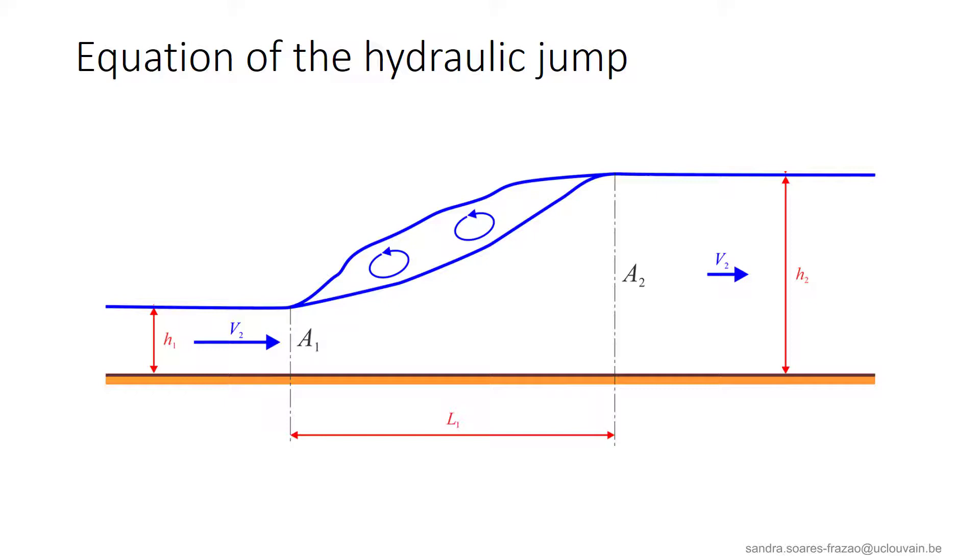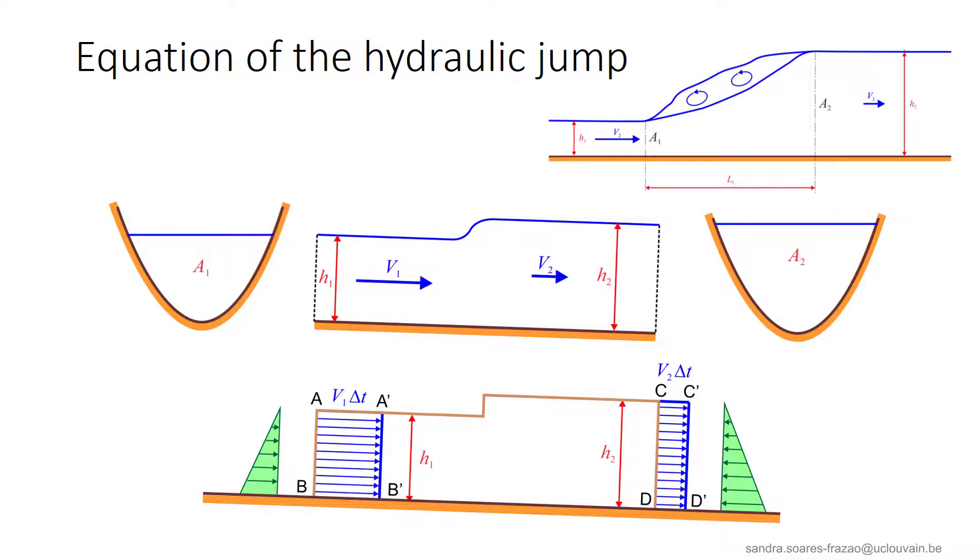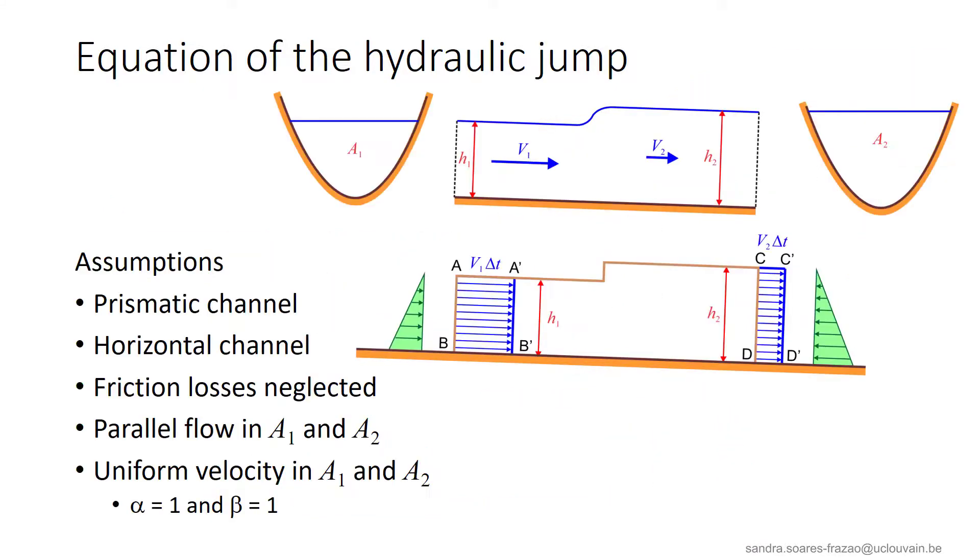As explained earlier, a hydraulic jump extends in the reality over a certain length, but to write the equations, it will be represented as a sharp discontinuity, as in this illustration. We will assume a prismatic, almost horizontal channel, which means that we will neglect the contribution of the weight parallel to the bed in the balance of forces. We will also neglect the friction losses, because these will be much smaller than the actual head losses occurring in the hydraulic jump. The flow is considered as parallel upstream and downstream from the jump, so we will choose a control volume according to this assumption. Finally, we will assume that the velocity distribution in these upstream and downstream sections is uniform, in such a way that the non-uniformity coefficients alpha and beta will be considered equal to 1.